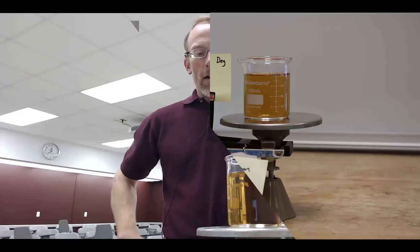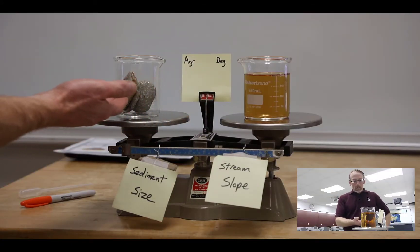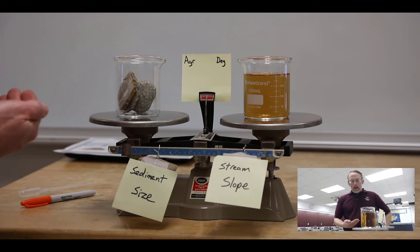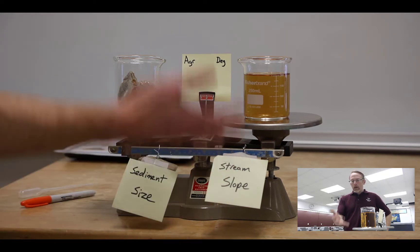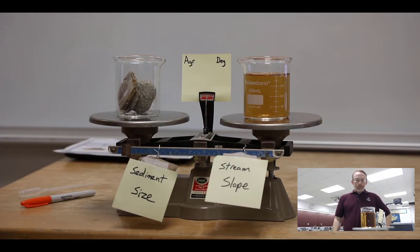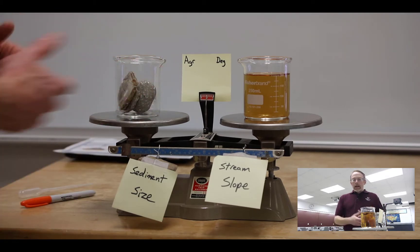Lane's balance is usually portrayed as a diagram that helps you understand the relationship between the amount of water in a system, the amount of sediment supply to a system, and the relationship between sediment size and stream slope to all these other variables.